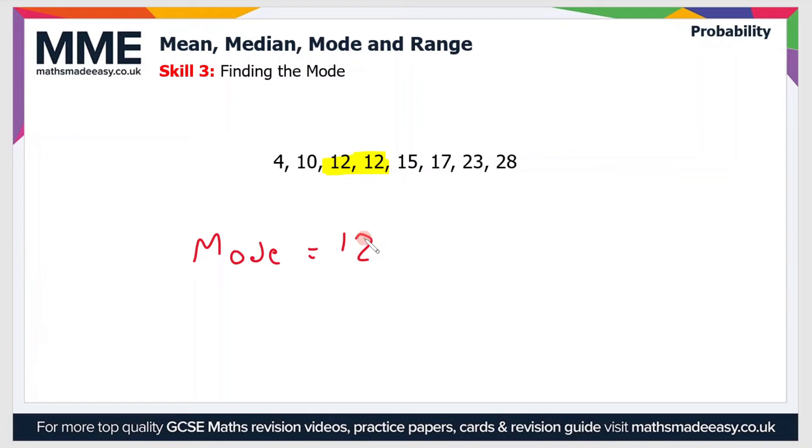Now, if there was more than one value that appears twice, so for instance, if we had another value of 28, then we would say that the data is bimodal.